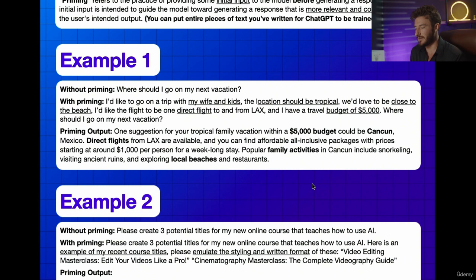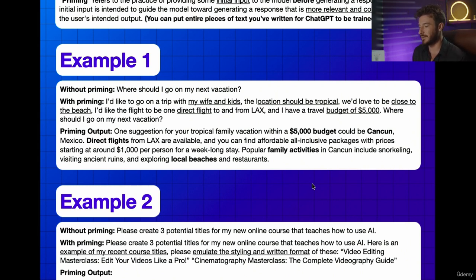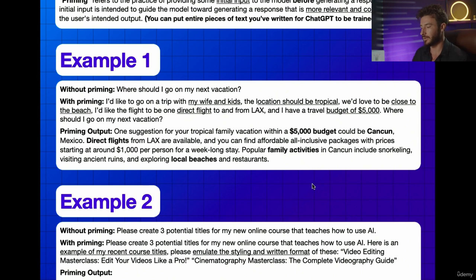Let's dive into these examples that further explain how prompt priming works. For our first example, without priming our prompt, the question is: where should I go on my next vacation? ChatGPT has no context, no data or details on how to effectively answer the question, so it's going to suggest any destinations around the world with no criteria.